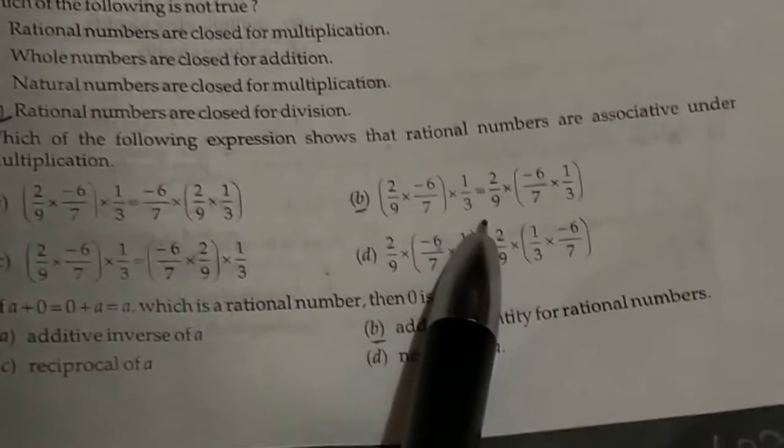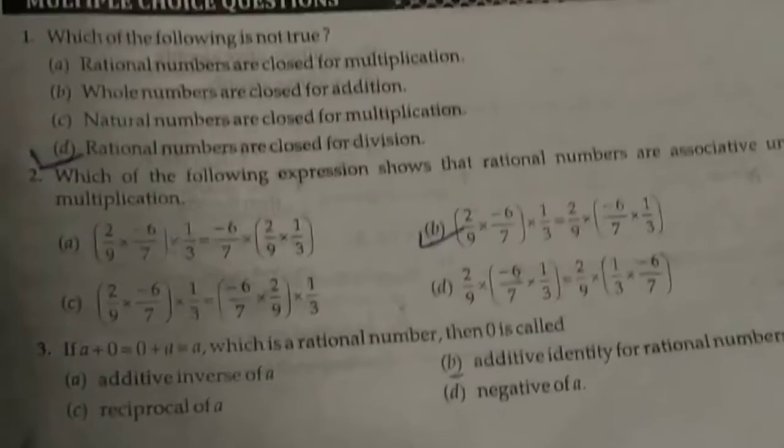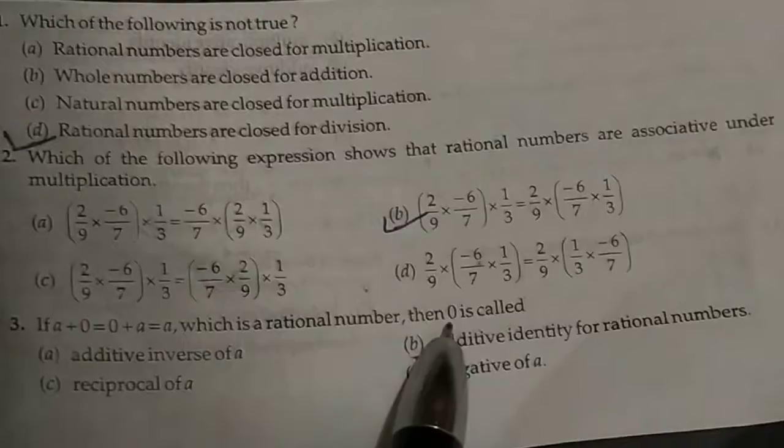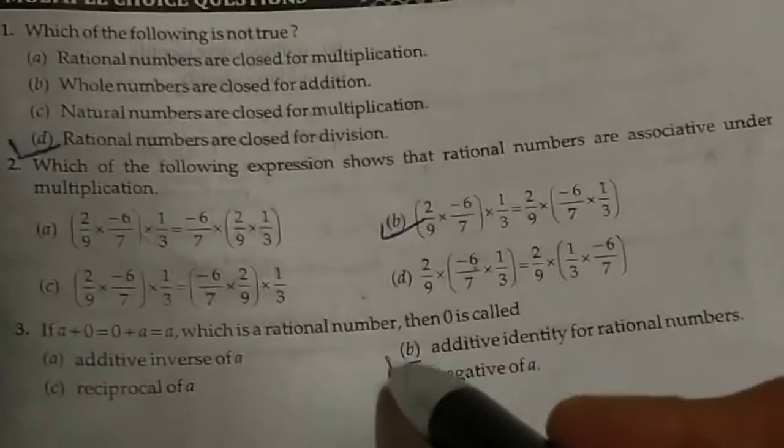This one is associative property. Third one is if a plus zero equals zero plus a, which is a rational number, then zero is called additive identity for rational numbers.